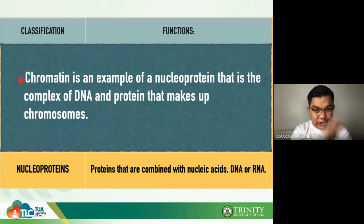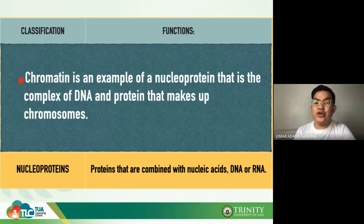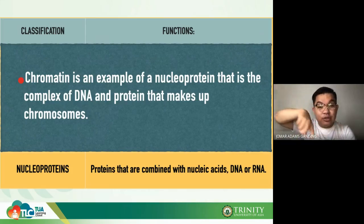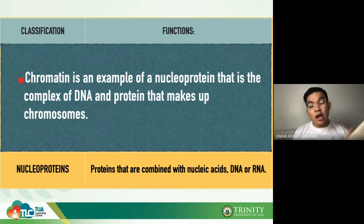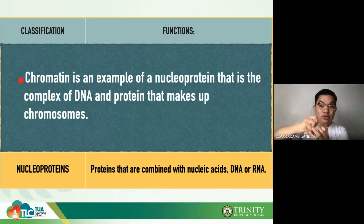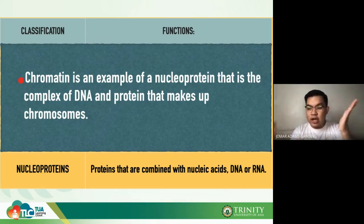Nucleoproteins are proteins combined with nucleic acids such as DNA and RNA. An example is histones — the double-stranded DNA is actually wrapped around histones. Think of histones as a core around which DNA wraps, eventually forming chromosomes.